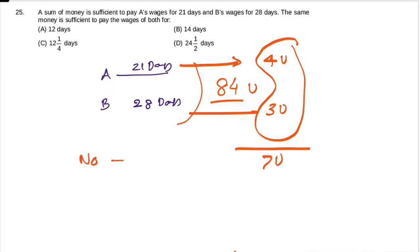How many days will it last? We have total money of 84 units, and per day is 7 units, so 84÷7 equals 12. That means 12 days, so our answer is option A.